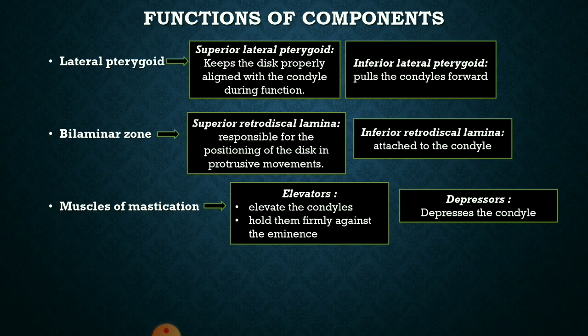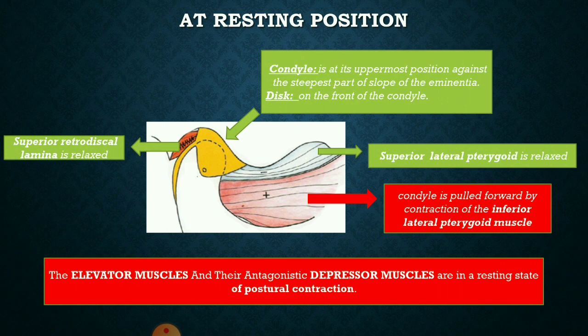Next, the muscles of mastication include elevators and depressors. As the names suggest, elevators elevate the condyle and mandible, holding them firmly against the eminence, whereas depressors depress the condyle and contract at the time of jaw opening. At the basic resting position, the condyle is at its uppermost position against the steepest part of the slope, and the disc is present slightly in front of the condyle.